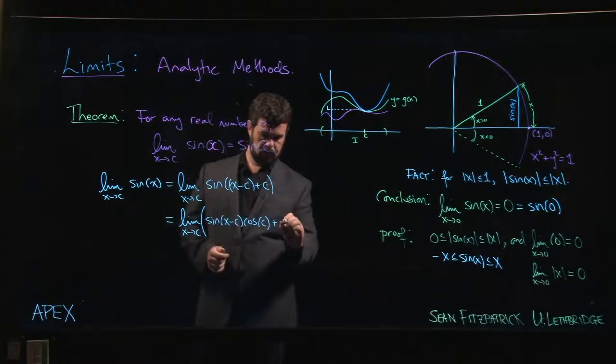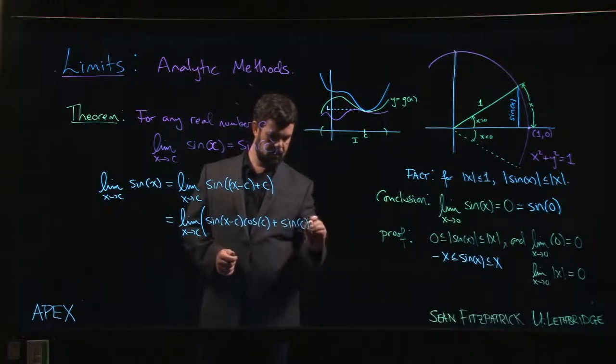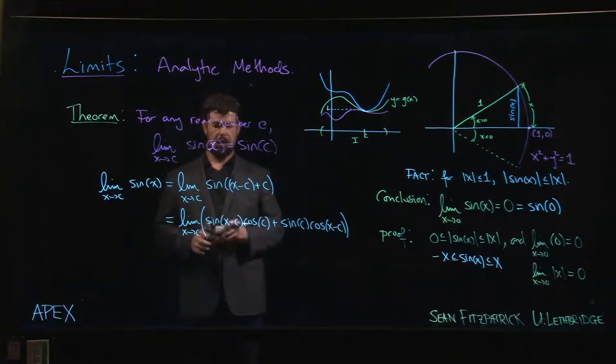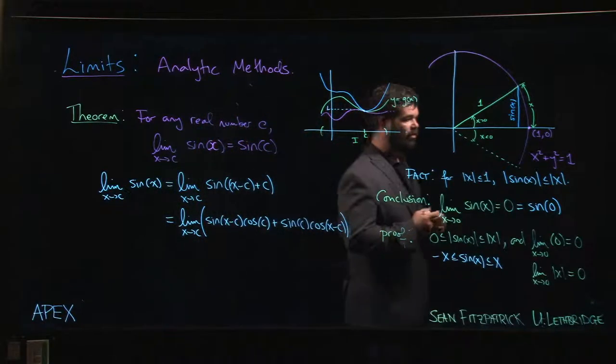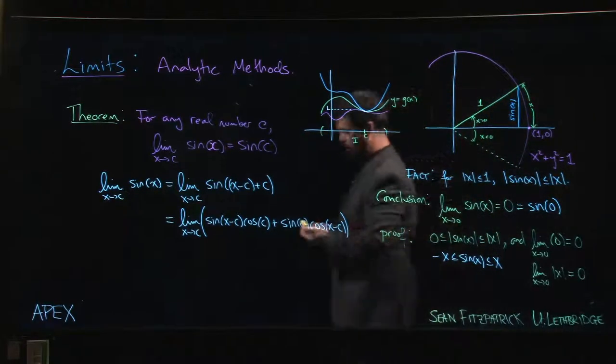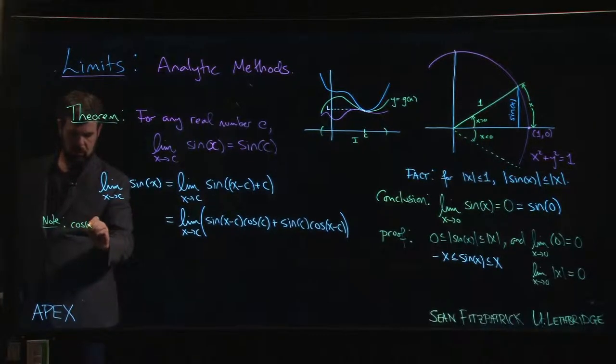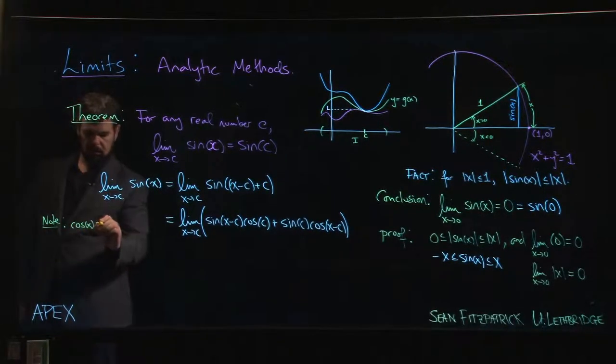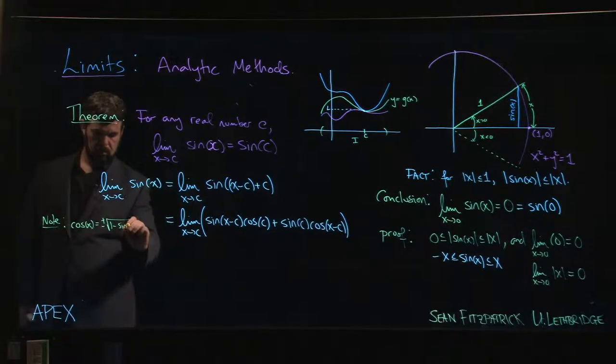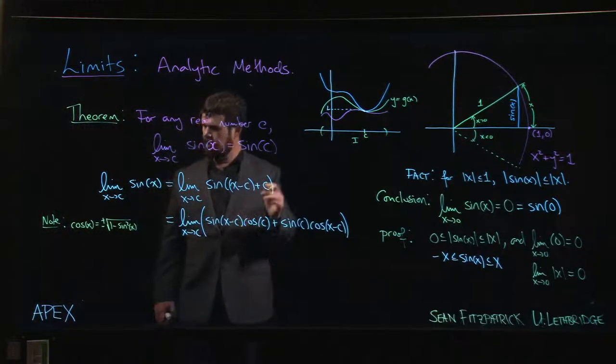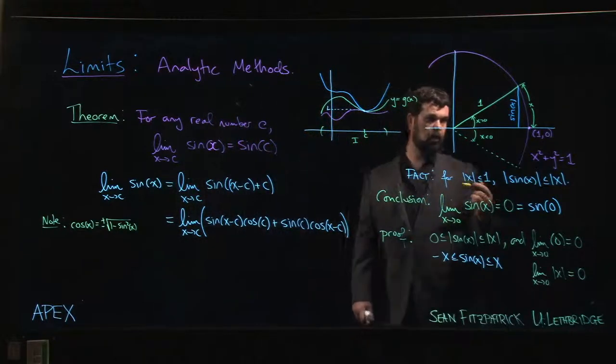Now there's a couple of observations that we have to make. So we can make these kind of notes on the side. One is that we know cos x can be written as, depending on which quadrant you're in, either plus or minus square root of 1 minus sine x squared.